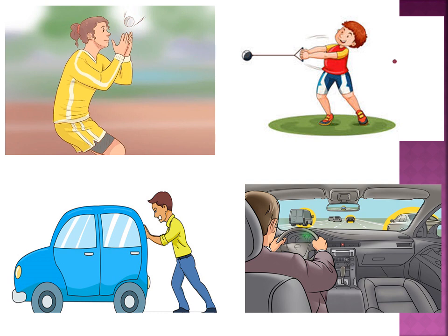In the first example, pushing a vehicle, the direction of the applied force and that of displacement are both in the same direction, so it is called positive work done. In the second example, catching a ball thrown towards you, the direction of the force and that of displacement are also the same, so this is also an example of positive work done.